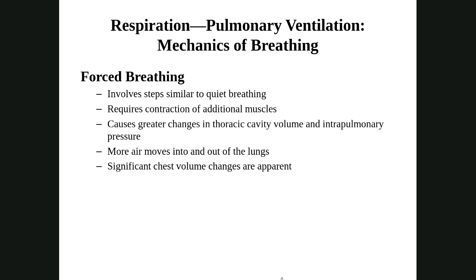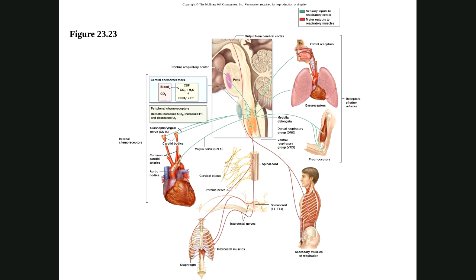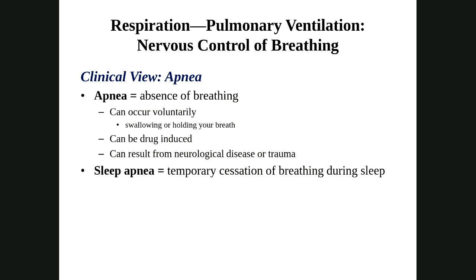The pons and medulla oblongata are controlling breathing — the medulla oblongata mainly controls autonomic functions, and breathing is an autonomic function. Apnea means absence or lack of breathing. If you hold your breath, you voluntarily create apnea. We often refer to it with sleep apnea — someone who stops breathing while asleep — which can cause serious problems and should be addressed.